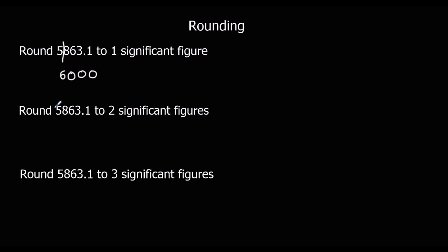Two significant figures: 1, 2. We look at the next number — it's a 6, so it is going to push it up. So that's going to become a 9. So we're going to have 5, 9. But again, these are thousands and hundreds. They stay as thousands and hundreds. So it's 5,900.